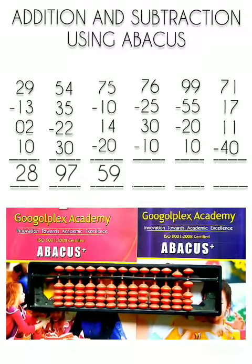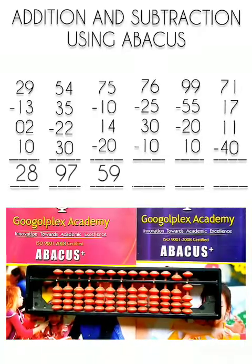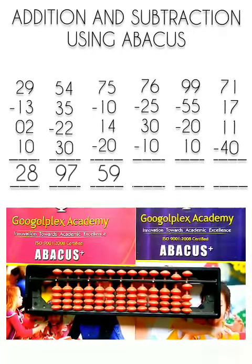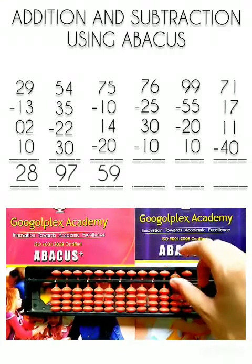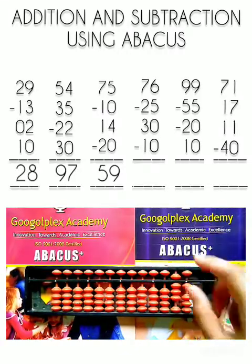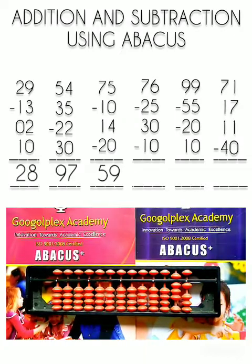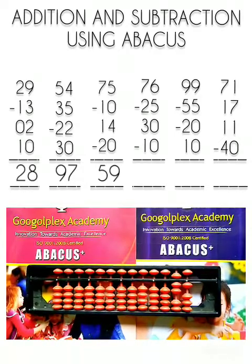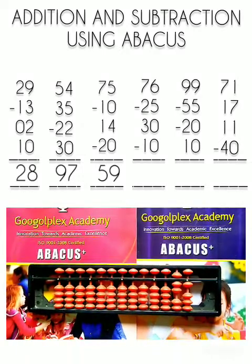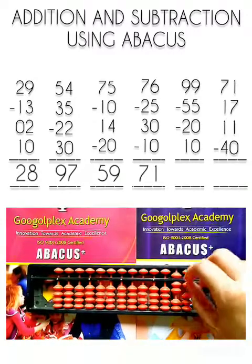25 is subtracted. Now we have to add 30 to this number. For 30 we will raise 3 beads of the 10's rod. 10, 20, 30. Now we have to subtract 10 from this number. Minus 10. Now what is our answer? Answer is 71. 71 is our answer.